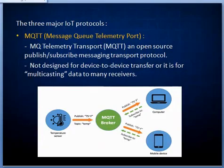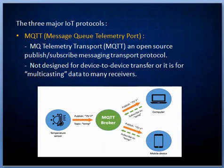Coming to the three major IoT protocols, the first one is MQTT — Message Queue Telemetry Transport. MQTT is a lightweight messaging protocol that was developed by IBM and first released in 1999. It uses the publish-subscribe pattern and translates messages between devices, servers, and applications.